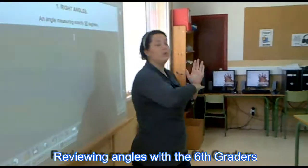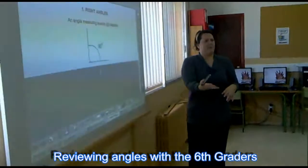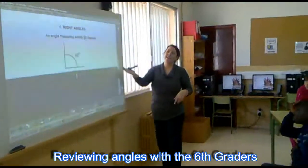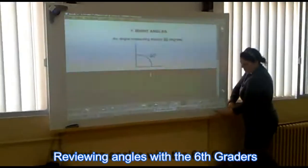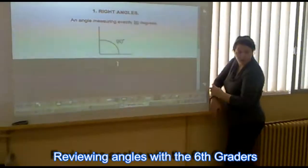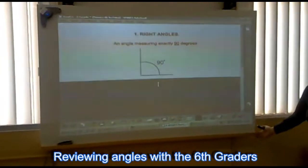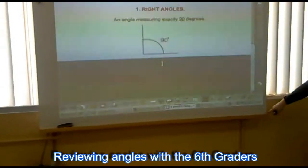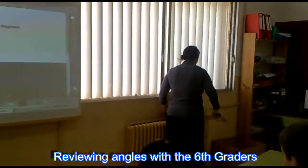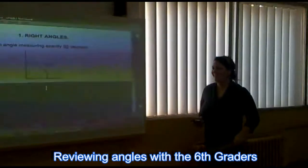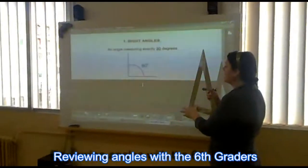A right angle is an angle measuring exactly 90 degrees. So is this a right angle? Right here. I think that's a right angle — 90 degrees. There you have a set square if you want to use it. So is this a right angle? Yes, it's 90 degrees.